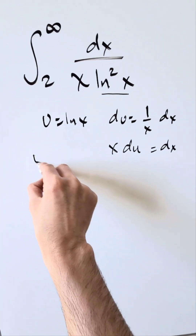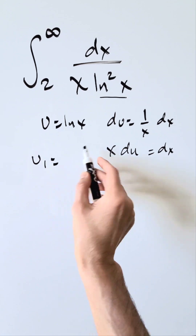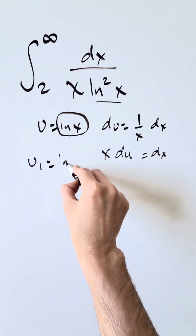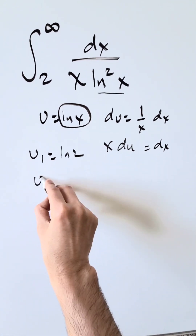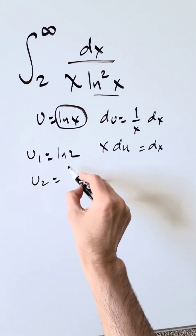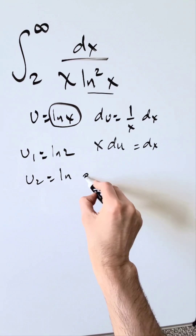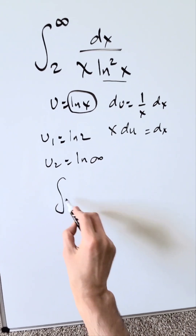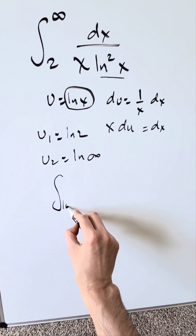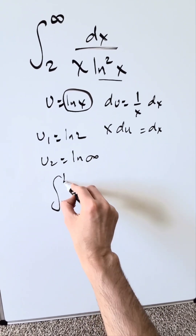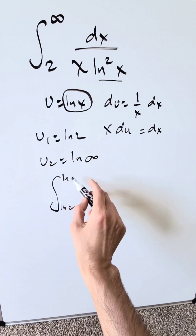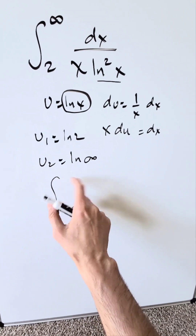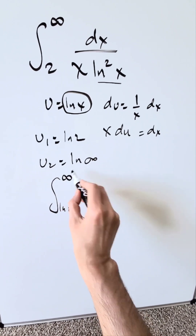New limits. U₁ is equal to natural log 2. U₂ is equal to natural log infinity, which is infinity — might as well just write it as infinity.